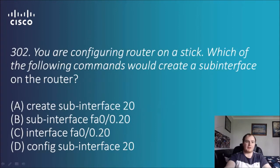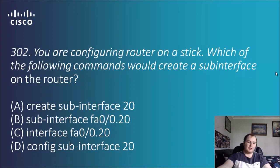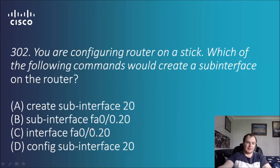Question 302: you are configuring router-on-a-stick. Which of the following commands would create a sub-interface on the router? The options include general interface commands and things like 'create sub-interface 20', 'sub-interface fa0.2', 'interface fa0.2', and 'config sub-interface'. The correct syntax uses 'interface' followed by the sub-interface notation, so the answer is C: interface fa0.2.